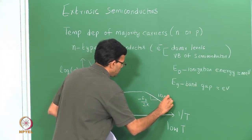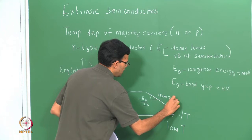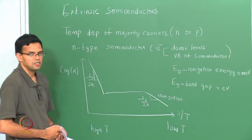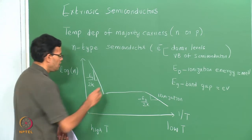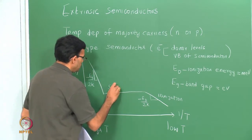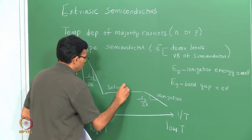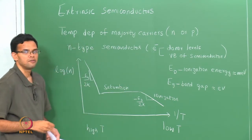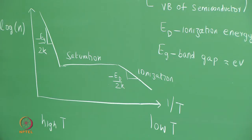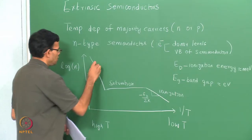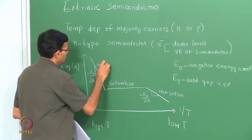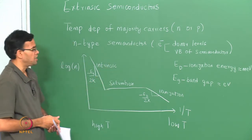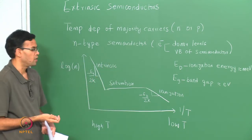We have three regimes in the case of an extrinsic semiconductor. The low temperature one we call the ionization regime, because it is dominated by ionization of the donor atoms. Then you have a saturation regime, where the concentration of electrons — the majority charge carriers — is nearly a constant. And then we have an intrinsic regime, where your extrinsic material behaves like an intrinsic one.